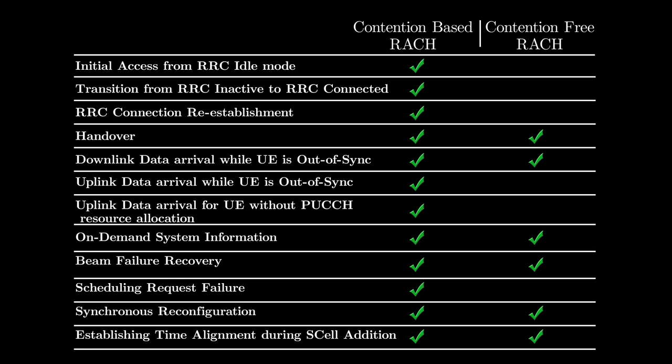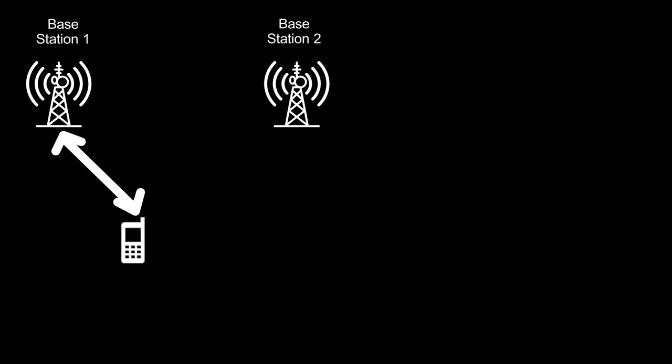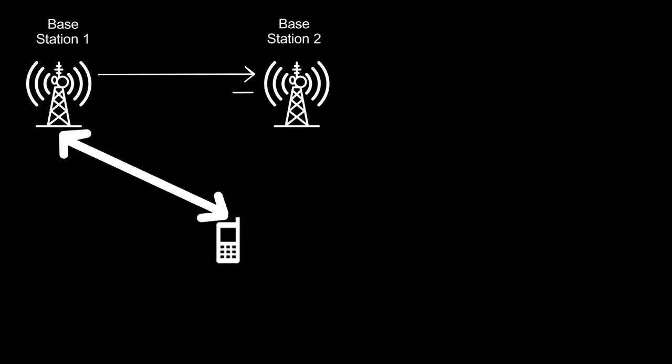For example, RACH procedure can be used for handover when a UE transfers its connection to a neighboring base station while traveling. In that case, base station 1 can tell the UE where to look for SSBs from base station 2. So, the UE only needs to look for SSBs in those frequencies and time slots only. This speeds up the connection procedure.